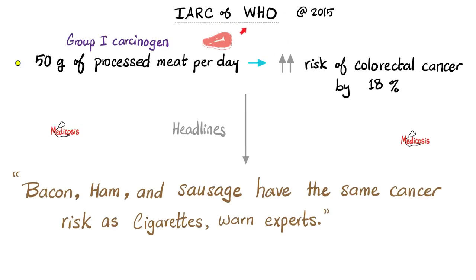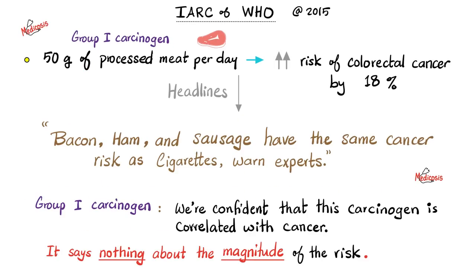In that last video, I told you the story of the WHO announcing that 50 grams of processed meat per day increased the risk of colorectal cancer by 18%. Unfortunately, most newspapers and news media made two big mistakes. Mistake number one is not understanding what group one carcinogen even means — it means that we're confident this thing is a carcinogen, but it tells you nothing about the magnitude of the risk. Meat is not in the same category as cigarettes; one has a greater magnitude of risk compared to the other.